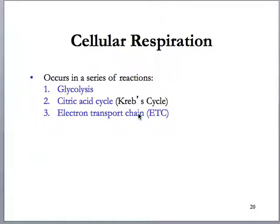I'm going to go through cellular respiration, and how I discuss it is how I want you to understand it. So a lot of this is just big picture. The three steps of cellular respiration: we have glycolysis, the citric acid cycle — also called Krebs cycle, or sometimes referred to as the TCA cycle — and then the electron transport chain.